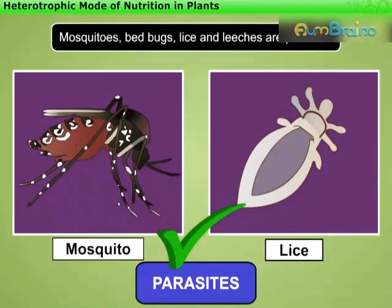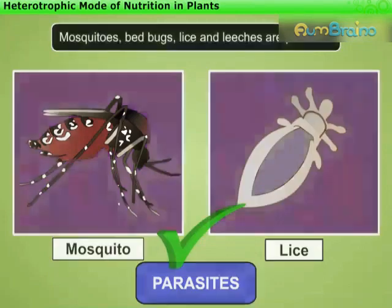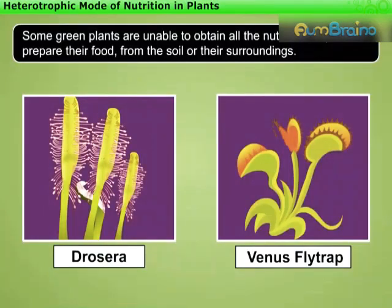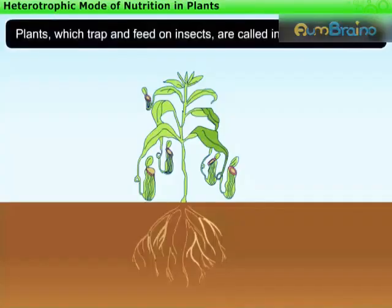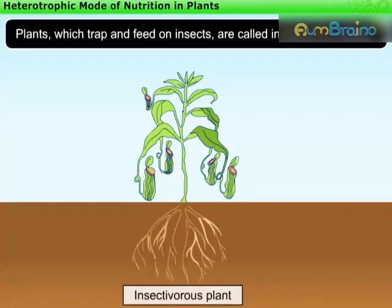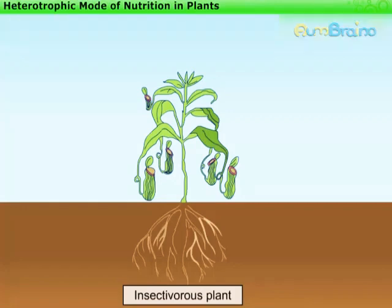However, mosquitoes, bed bugs, lice, and leeches are parasites because they suck human blood and depend on humans for their food. Some green plants like Drosera and Venus flytrap are unable to obtain all the nutrients they need from the soil or their surroundings. In such cases, these plants develop special features which help them survive — they can trap insects and digest them. Plants which trap and feed on insects are called insectivorous plants.